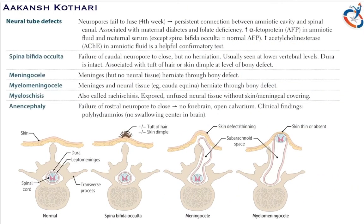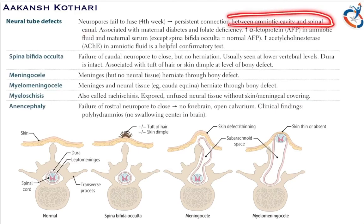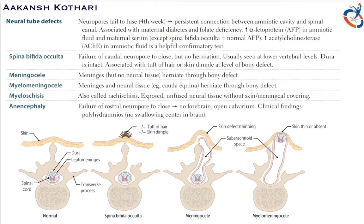Talking about the pathology aspects of the nervous system, which includes neural tube defects: neural tube defects occur when the neuropores fail to fuse in the fourth week, creating a persistent connection between the amniotic cavity and the spinal canal. They are associated with maternal diabetes and folate deficiency. The key finding is an increase in alpha-fetoprotein levels in the amniotic fluid and maternal serum.